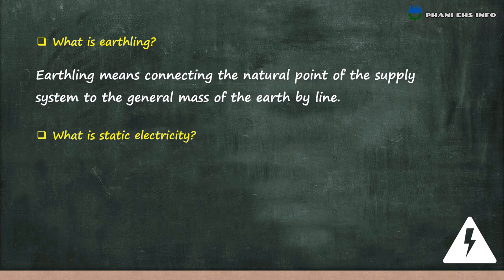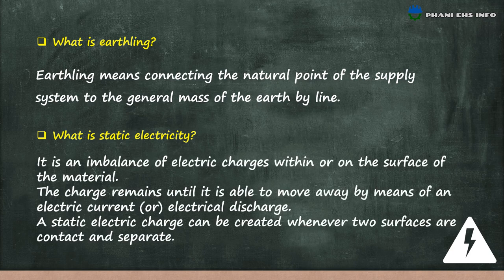What is static electricity? It is an imbalance of electrical charges within or on the surface of a material. The charge remains until it is able to move away by means of an electrical current or electrical discharge. A static electrical charge can be created whenever two surfaces are in contact and separated.